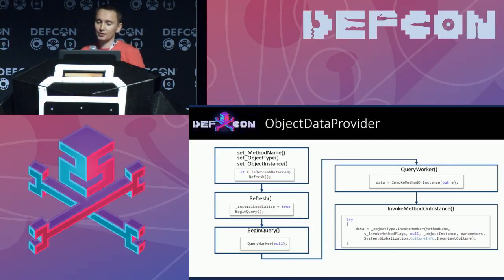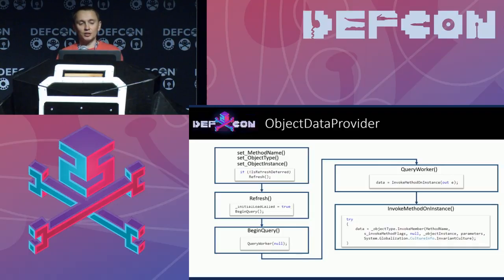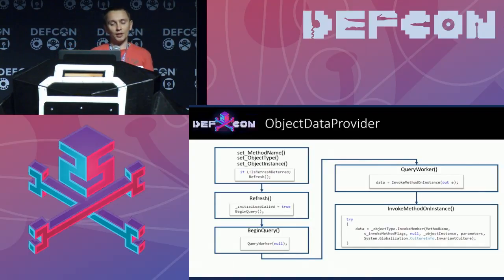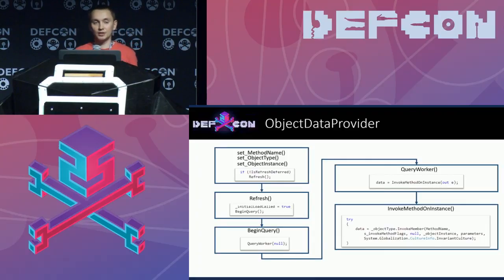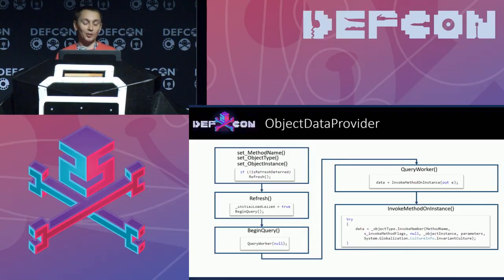Our final gadget is ObjectDataProvider type. It's quite flexible and allows a lot of ways for attack. As a result, we were able to use it in almost all our unmarshallers and formatters. The setter calls the Refresh method, which invokes BeginQuery, which calls QueryWorker, and finally invokes a method on the instance — that line calls our arbitrary method.